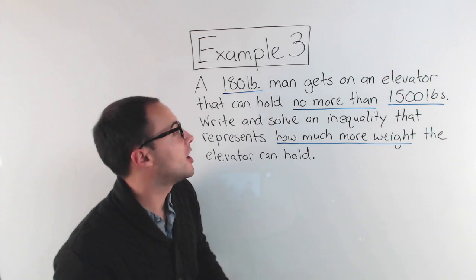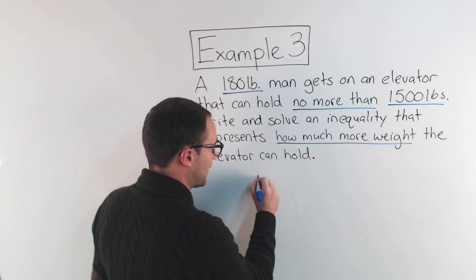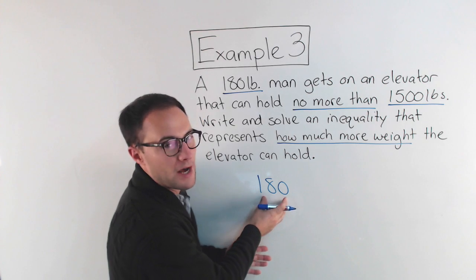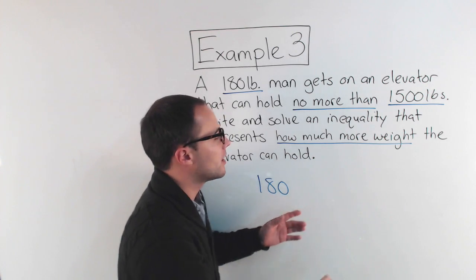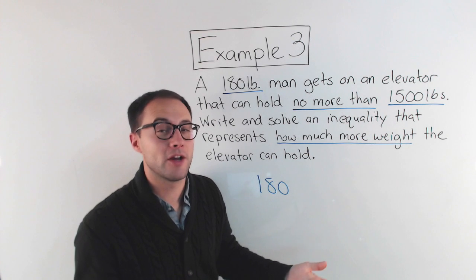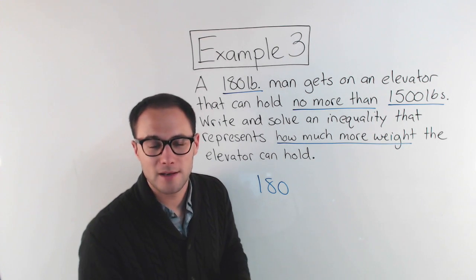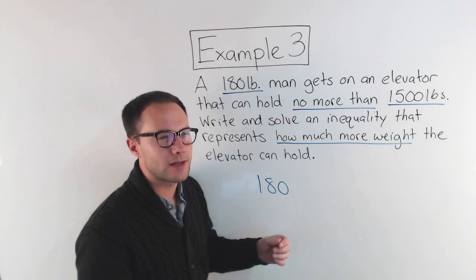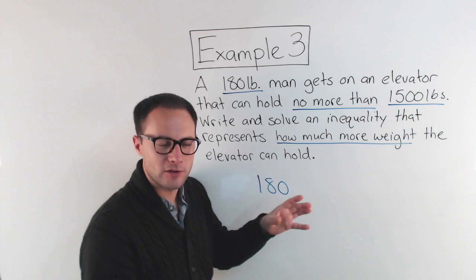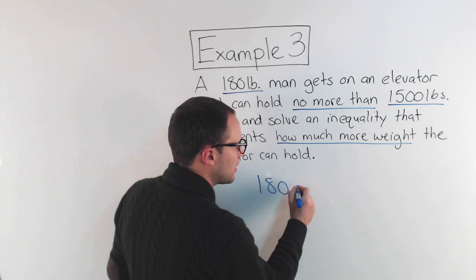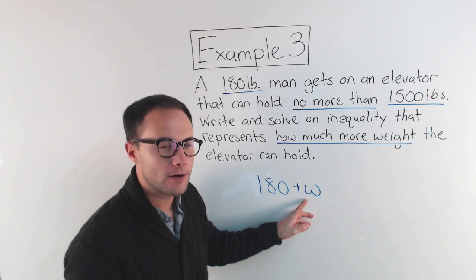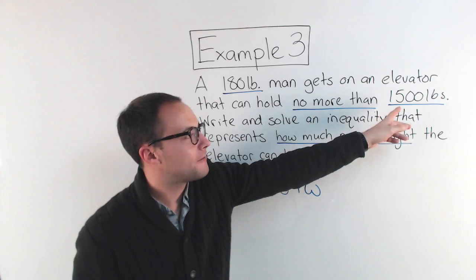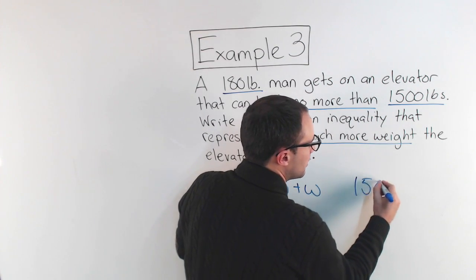Well, we're starting with 180 pounds on the elevator, right? The man's on the elevator, so we've got 180. We want to know how much more. Well, if we already have 180 and we're thinking about how much more, we don't know how much more, so that's going to be our variable. If we're talking about how much more weight, let's call it W. So 180, are we going to add that W to 180? Are we going to subtract? Well, we're looking kind of for the total weight, so we're going to add that. 180 plus W, that's how much more. All of that together has to be no more than 1,500 pounds.